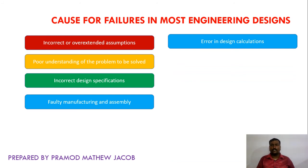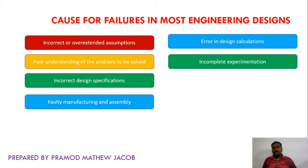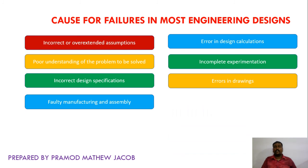Next is error in design calculations. We have to precisely and accurately perform the calculations, otherwise the design may go in vain. Designers may design some systems using trial and error methods and conduct experiments, but these may not always be complete or successful, so incomplete experimentation may lead to system failure. The next cause is errors in drawings. For most engineering designs, we have to provide a graphical representation or drawing so the developer can easily build the system, but if the designer commits mistakes in drawings, it may lead to product failure.